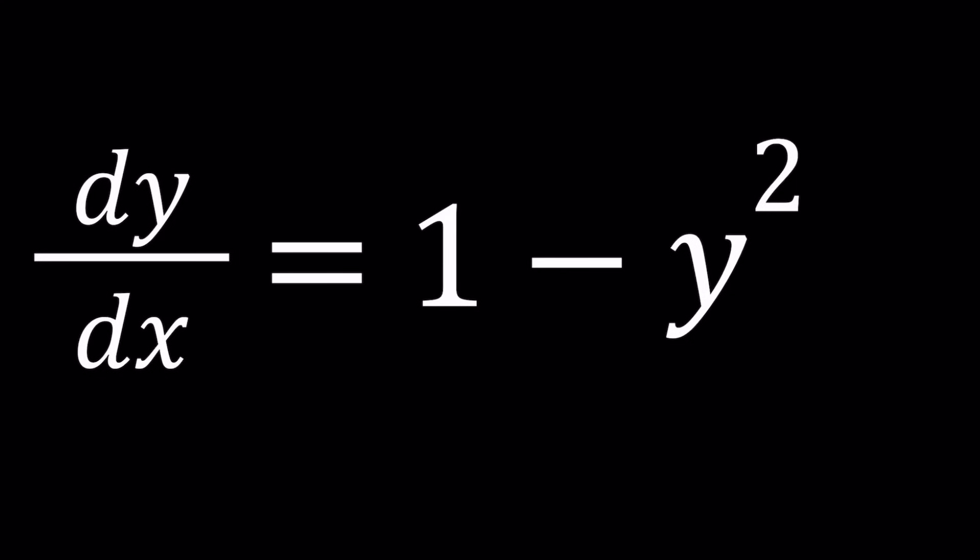Hello everyone. In this video, we're going to be solving a differential equation. Notice that we don't have x on the right hand side, we only have y. So we have dy over dx equals 1 minus y squared, and we're going to be solving for y values. There is no initial condition, so we're going to find a general solution up to some constants.